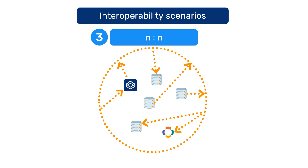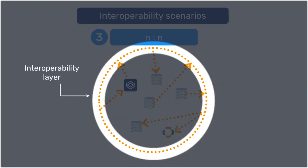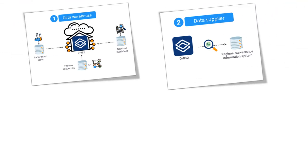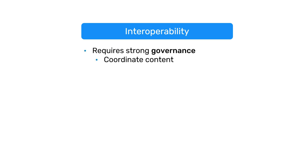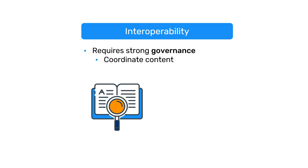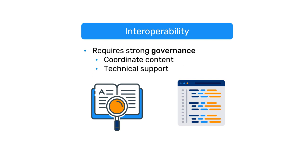This can be achieved through the use of an interoperability layer, which is a separate piece of software that coordinates the exchange of data between multiple systems. In each scenario described in this video, interoperability is not as straightforward as simply connecting the systems to each other. Interoperability is a process that requires strong governance to coordinate content across systems, including the initial work to align or map data between systems, as well as technical support for the initial integration and on an ongoing basis as systems are updated and modified, and as the larger information system architecture changes.